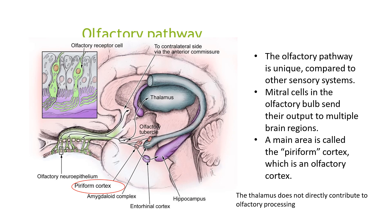The olfactory pathway is quite unique compared to other sensory systems. Mitral cells in the olfactory bulbs send their output to multiple brain regions. A main area is called the piriform cortex, which is the olfactory cortex. It is important to note that the thalamus does not directly contribute to olfactory processing.